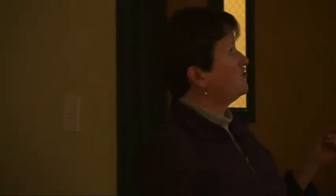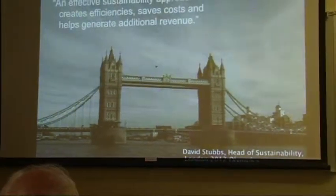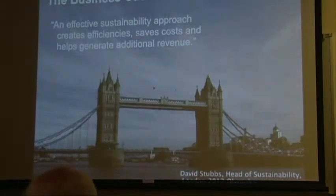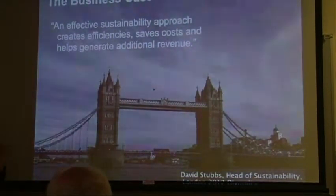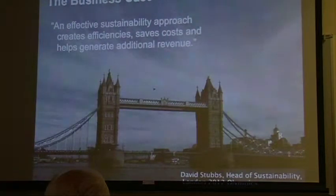In particular, this is a quote from the head of sustainability for the London Olympics: 'An effective sustainability approach creates efficiencies, saves costs, and helps generate additional revenue.' Those are basic bottom-line goals. A key requirement was that the head of sustainability be involved in every single procurement decision — not sitting in a separate sustainability office, but at the table whenever business decisions were being made.